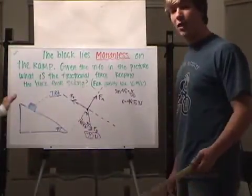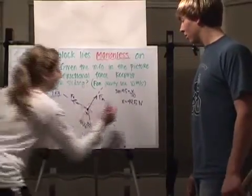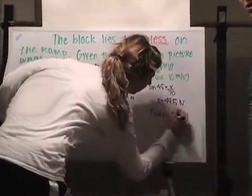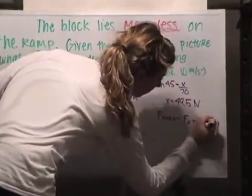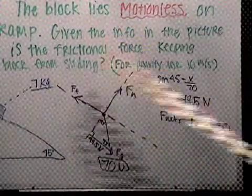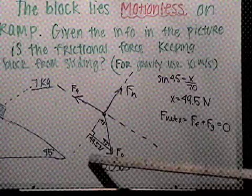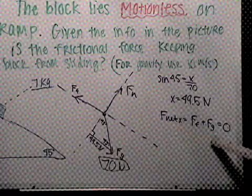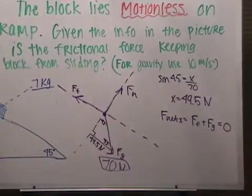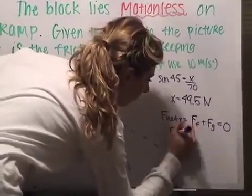Now, as we set up our f net equation, we have f net x equals the force of friction plus the force of gravity, all equal to zero. Because once again, the block is motionless. Now, we do know that we just found the x portion of gravity, which is 49.5 newtons. So now we have f net x is equal to the force of friction plus 49.5.